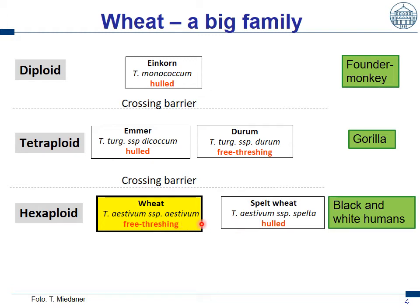We can also cross spelt with wheat and vice versa. Compared to wheat, emmer is something different. Making the same comparison with humans, this would be at least a gorilla — that's a much larger genetic distance — and we cannot cross emmer with wheat. Emmer and durum, on the other hand, are closely related like wheat and spelt.